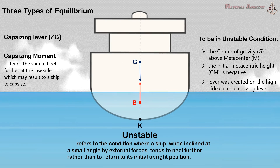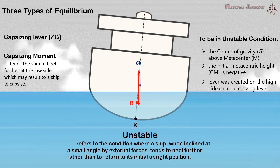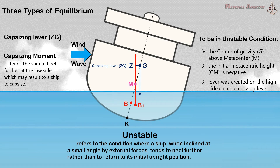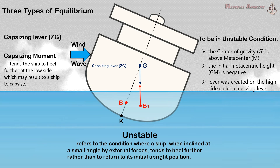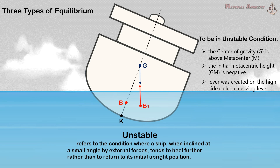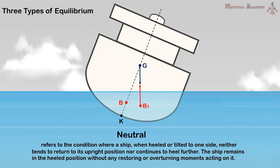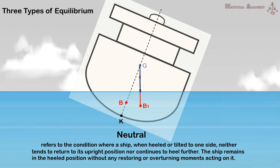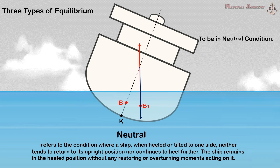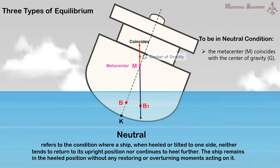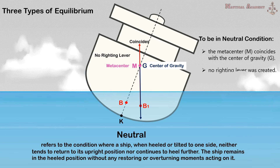But remember that a ship with a very small negative initial metacentric height or very small negative GM may not necessarily capsize. Let us examine carefully the movement of the two forces in this condition. When a ship has a negative metacentric height, it tends to heel or tilt to one side until it reaches a position where the buoyant force acts vertically above the center of gravity. The ship will then stop tilting and remain in this position if there is no external force acting on her. The capsizing moment disappeared, and the ship did not capsize but remained in an inclined position. In this condition, the ship is in neutral equilibrium. Neutral equilibrium refers to the condition where a ship, when heeled or tilted to one side, neither tends to return to its upright position nor continues to heel further. The ship remains in the heeled position without any restoring or overturning moments, and the metacenter M coincides with the center of gravity G. No righting lever is created, so the righting moment is zero.